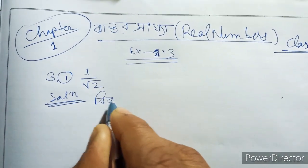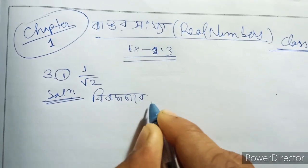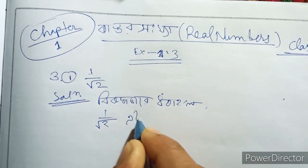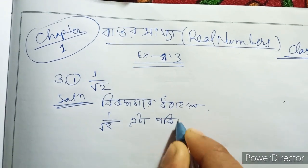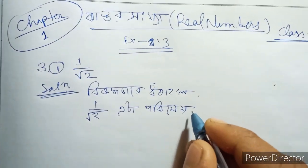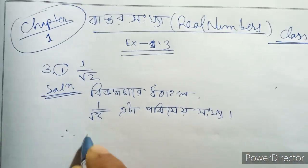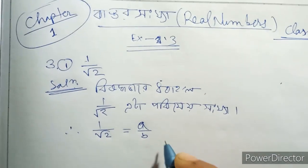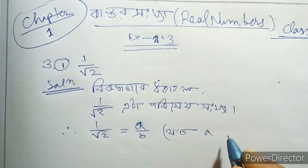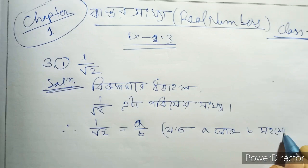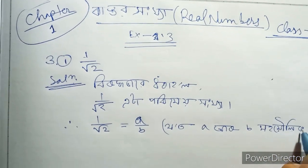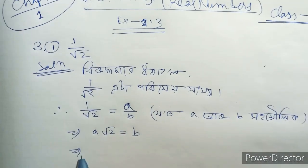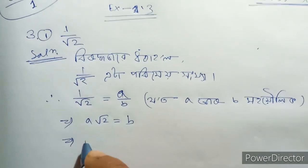The solution is 1 by root 2. We say 1 by root 2 is equal to a by b, where a and b are integers. So 1 by root 2 equals a by b.